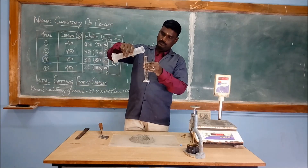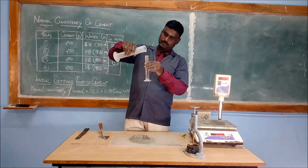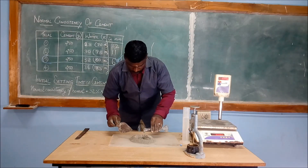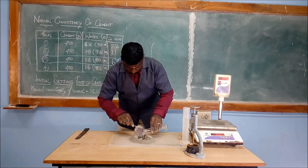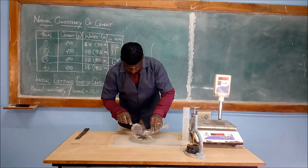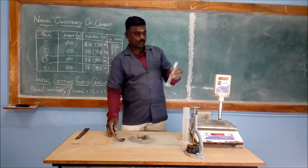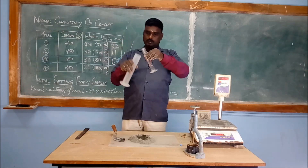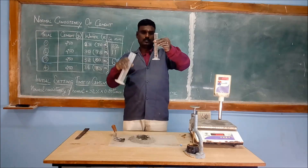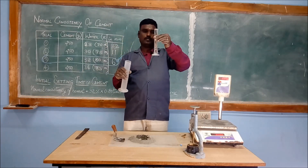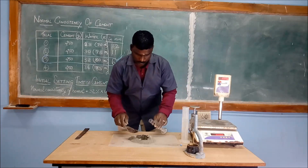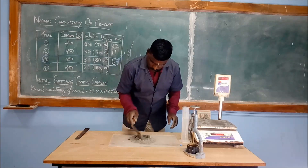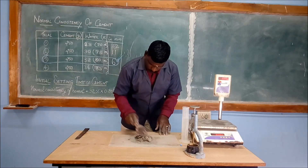Now we are pouring 50 ml of water in the measuring jar. Now we are pouring the water — 50 ml — into the cement. The remaining balance water will also be placed in.